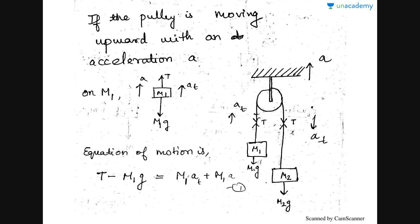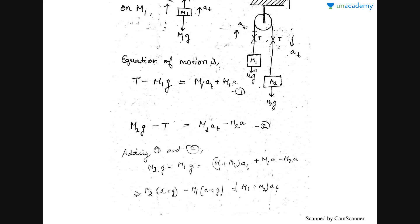Now the free body diagram changes a little. For m1, we have considered the relative movement of the masses to be downward as before. There is the upward acceleration due to the pulley moving as a whole, the downward weight, and the upward tension. So the equation of motion for m1 is: T minus m1g equals m1 times a_t, where a_t accounts for the acceleration of the pulley as a whole.